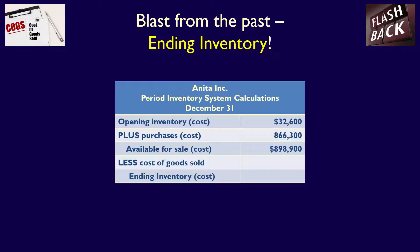What if we switch this? What if we knew the cost of goods sold, but not the ending inventory? Would we be able to switch around the formula to calculate the ending inventory instead? Absolutely. Available for sale minus the cost of goods sold is equal to the ending inventory. So $898,900 of available for sale minus the cost of goods sold of $870,400 is equal to the ending inventory of $28,500. Whichever amount we have, we can solve for the one unknown number, either cost of goods sold or ending inventory. Remember this as we move through this video to address the retail inventory method.